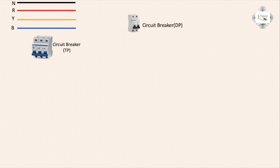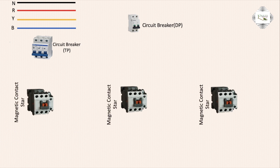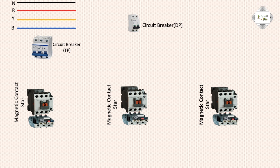A DP double-pole circuit breaker provides two input and two output connections. The magnetic contactor has three inputs and three outputs, with NO and NC contacts and an A1/A2 coil system, along with overload protection for the motor.